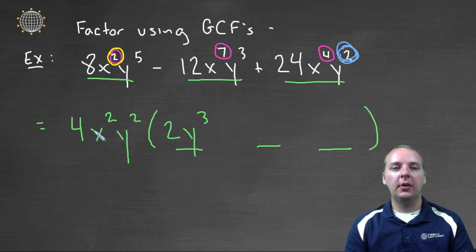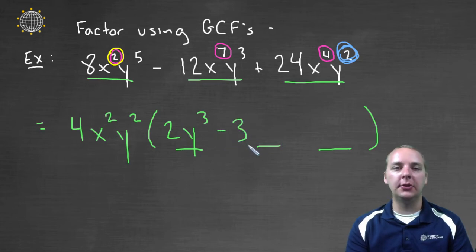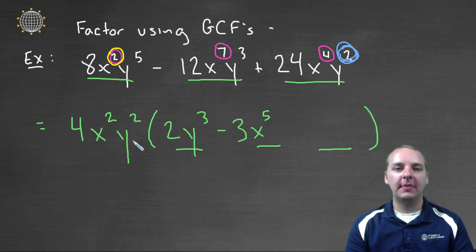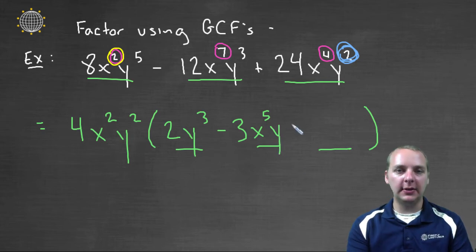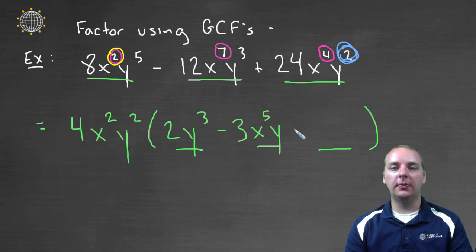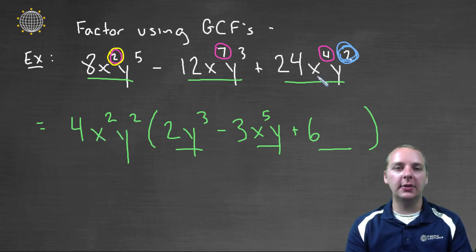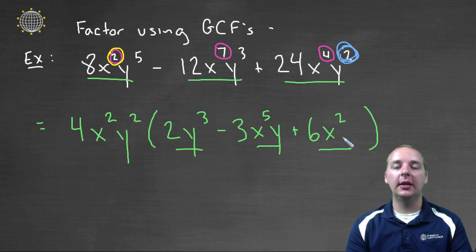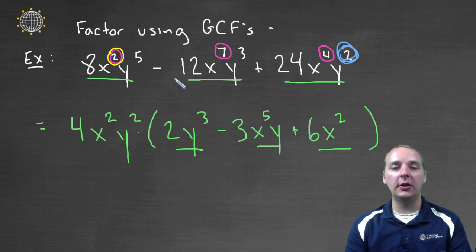For the last term: four times what gives twenty-four? That's four times six. X squared times what gives x to the fourth? That's x squared. And y squared times what gives y squared? That's just one, so we don't need to write it. We've factored this large polynomial by pulling out the GCF of four x squared y squared from all three terms.